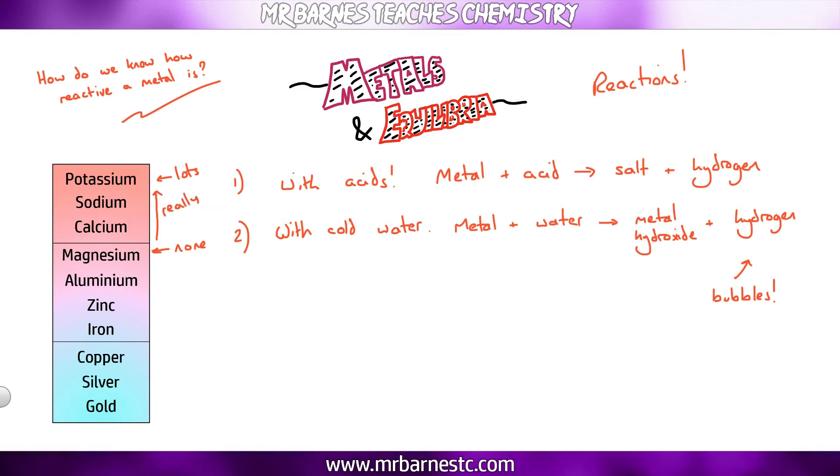From that you know that calcium upwards in this reactivity series are my really reactive metals, and then magnesium down to iron are less reactive. To make those react you need to actually react it with steam. So you take water, heat it up and turn it into a gas. When you do that you'll form an oxide, in this case magnesium oxide, and then you'll get your hydrogen bubbles.